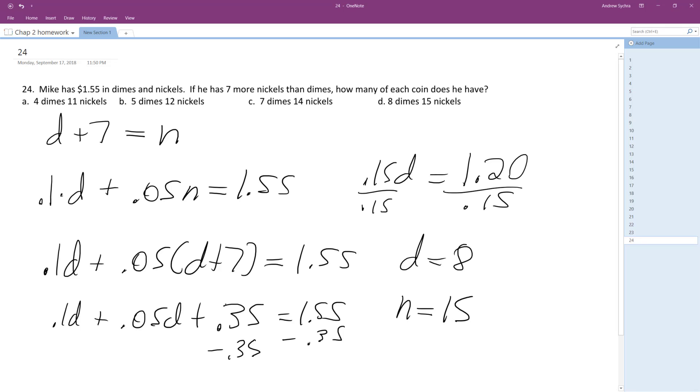Eight dimes, 15 nickels. So let's just check. So 15 nickels is equal to 75 cents, and then if we have eight dimes, that's 80 cents. 75 cents worth of nickels and then 80 cents worth of dimes. Yep, that checks out. So eight dimes, 15 nickels.